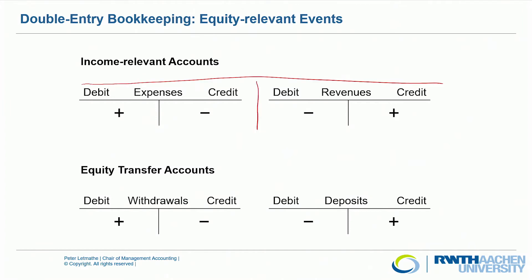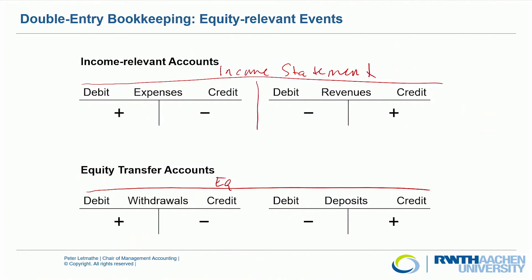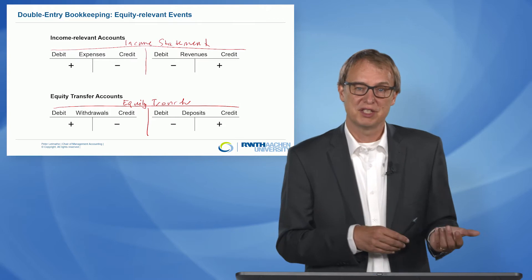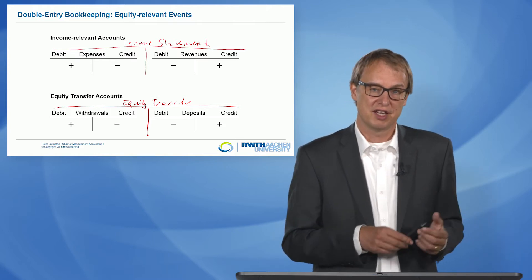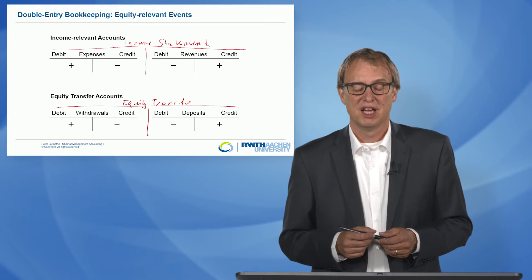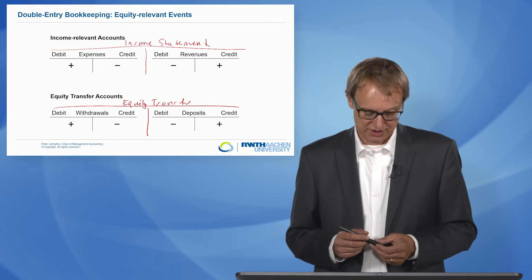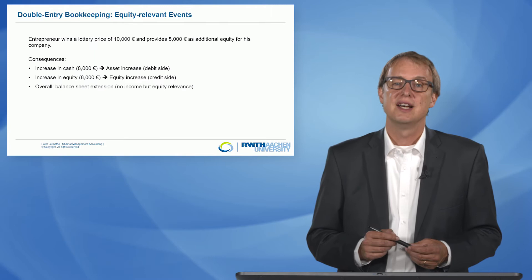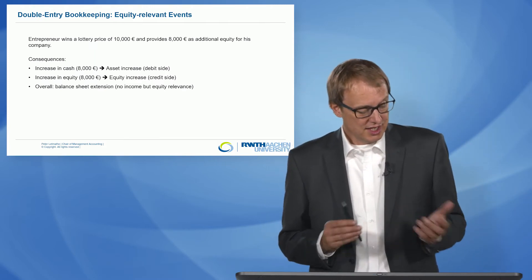Here you see again the relevant accounts. This is the structure of the income statement, and this is the structure of the equity transfer account. We can also depict this as a T-account: on the left side of the income statement we have expenses, on the right side revenues; with the equity transfer account we have on the left side the withdrawals of equity and on the right side the deposits.